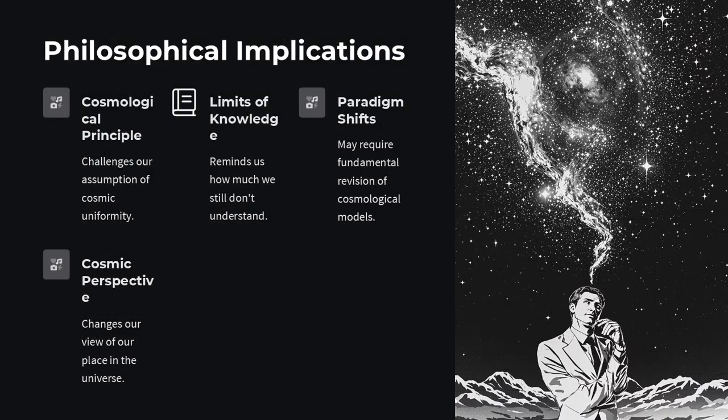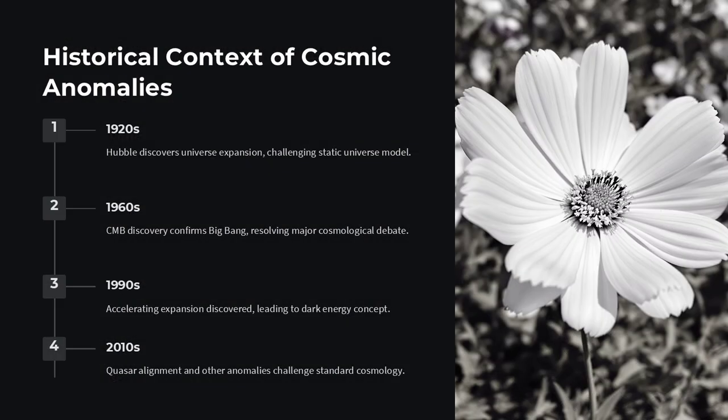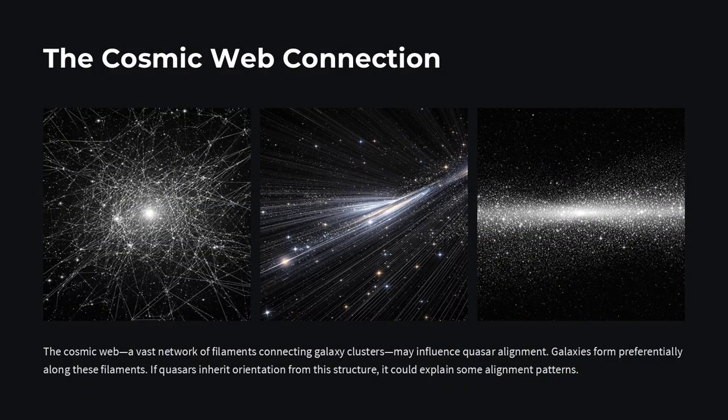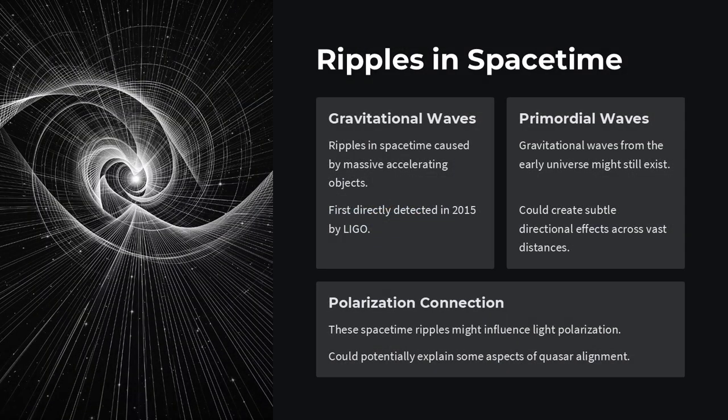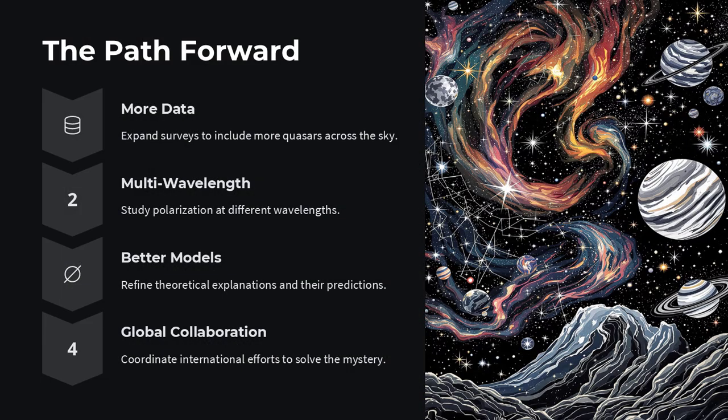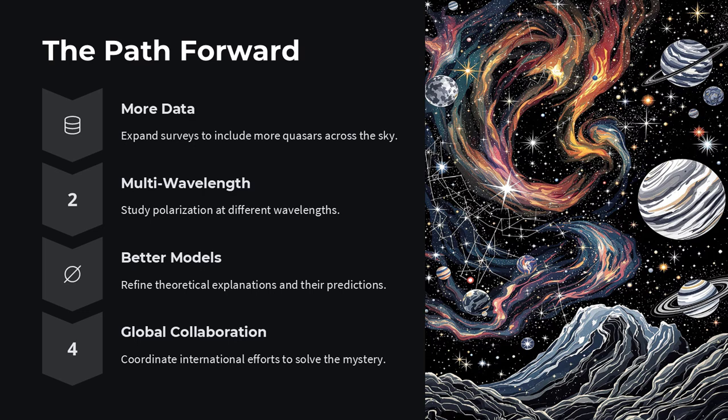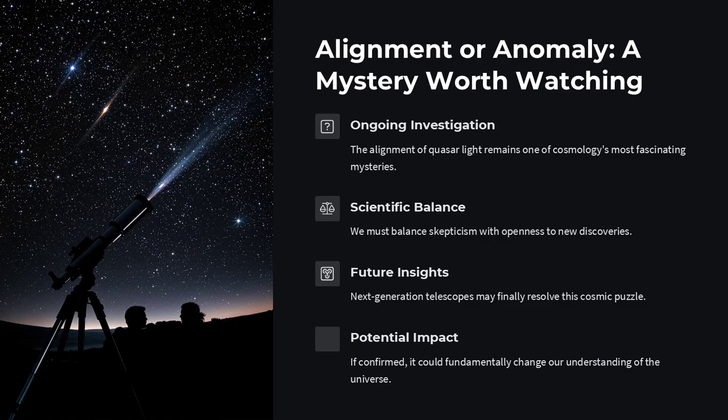What's next in unraveling this mystery? Observers are expanding surveys, gathering more quasar polarimetry across the sky and at different wavelengths. Meanwhile, theorists are refining models of intergalactic magnetic webs, axion-photon couplings, and even cosmic topology that might explain the alignment. As new telescopes come online, we'll probe deeper and with sharper precision, hoping to either dissolve the enigma as statistical fluke or uncover a profound key to the universe's hidden architecture.